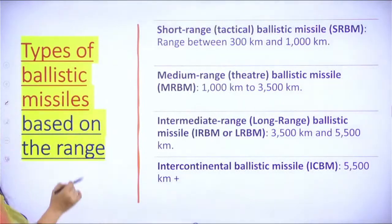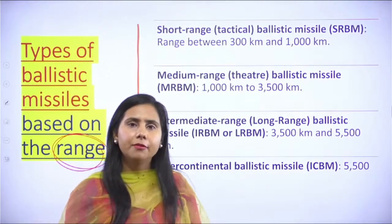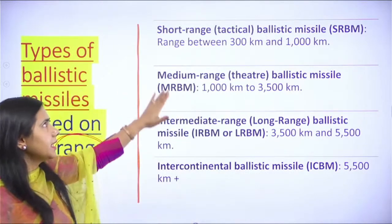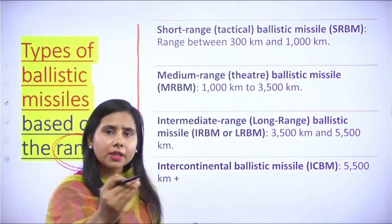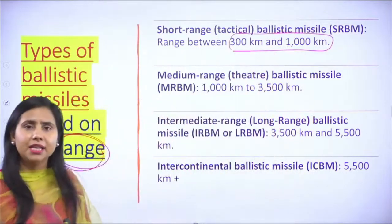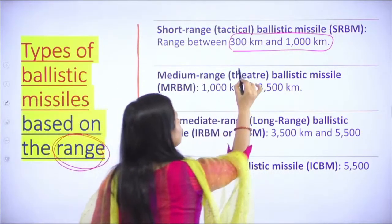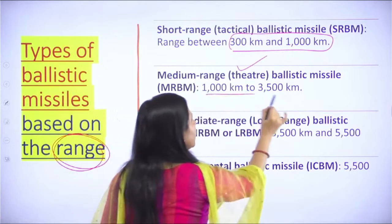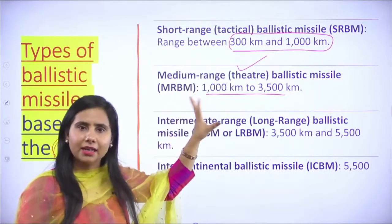Now looking at ballistic missiles classified by range. First is tactical ballistic missile — these are for short range, launched when the enemy is 300 km to 1000 km away. Second is medium range, also called theater ballistic missile — used when the enemy is 1000 km to 3500 km away.